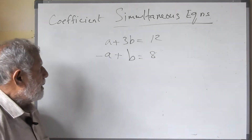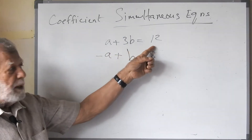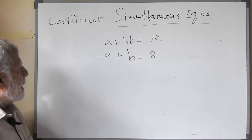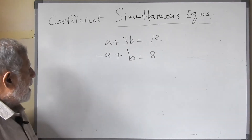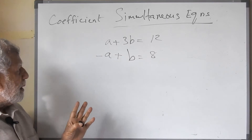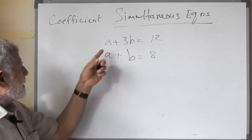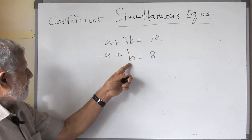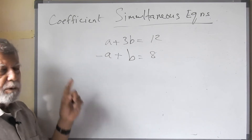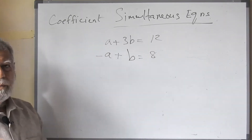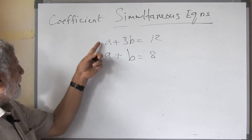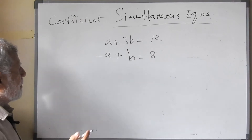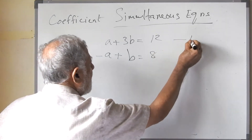Look at this next equation. A plus 3b equals 12, and minus a plus b equals 8. When you look at the unknowns, b has different coefficients so we can't work with that directly. But we notice that in a, the coefficient is 1 and 1. So we have to work with a. Now we decide whether to add or subtract — here we have plus a and minus a, and plus a and minus a becomes 0 when we add. So we will add equation 1 and equation 2.